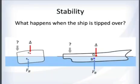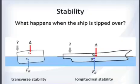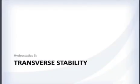Stability refers to what happens when a ship gets tipped over. There are two major kinds: transverse stability and longitudinal stability.